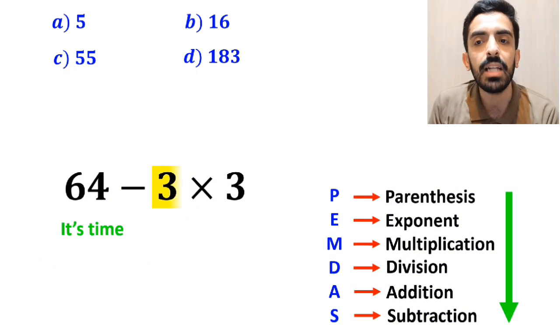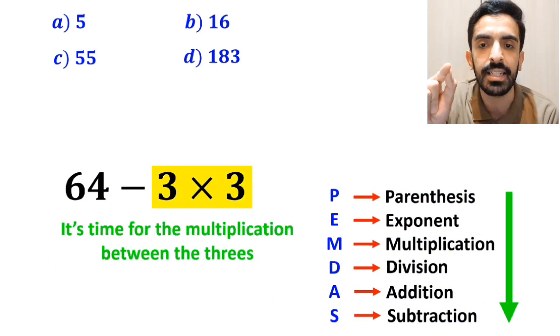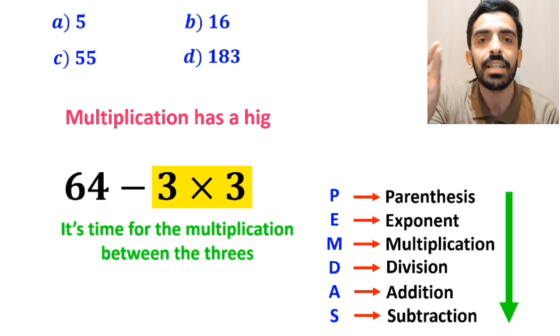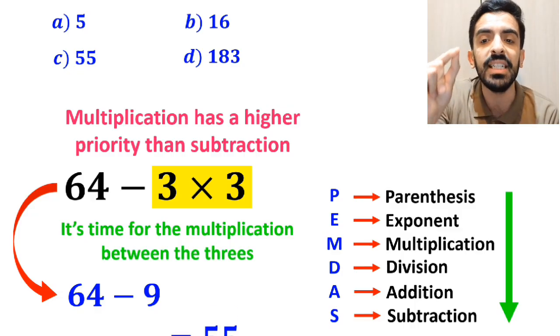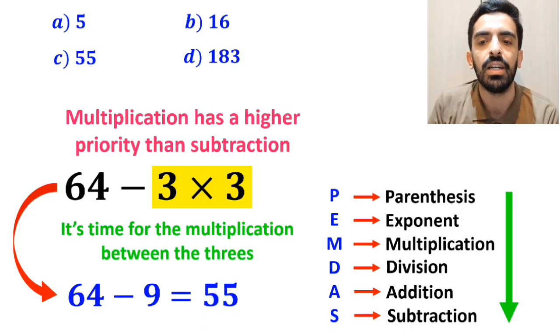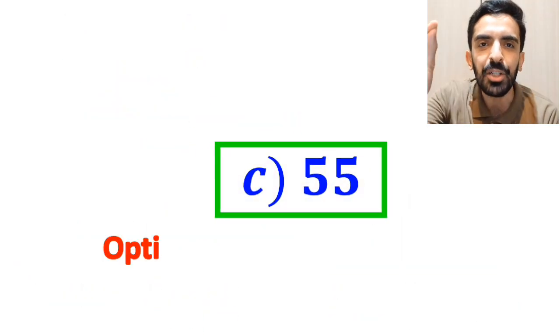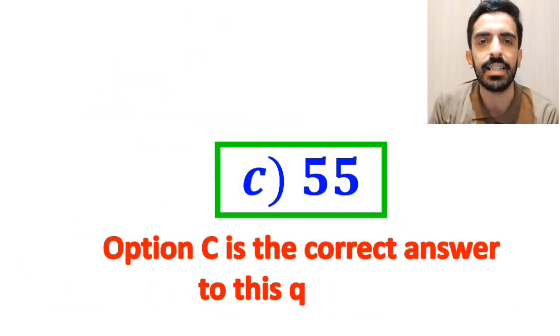And the final step, it's time for the multiplication between the 3s, because multiplication has a higher priority than subtraction. So we'll write this expression as 64 minus 9, which ultimately gives us the answer 55. Therefore, option C is the correct answer to this question.